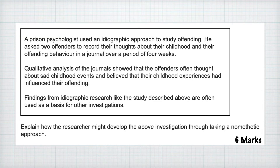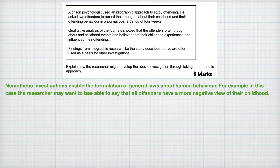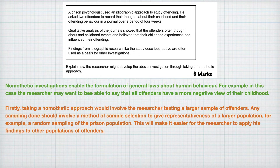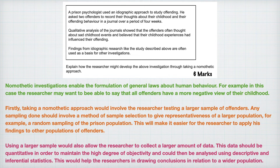So this is what I would do. I would start by saying what a nomothetic approach actually is and obviously relate it to the question. Then I would start giving my examples of what the researcher could actually do — things like taking large samples and why they should take large samples, what that sampling might look like, data analysis with examples of data analysis techniques, and why they might want to conduct data analysis in terms of creating general laws. On the screen you can see some examples of what I would do. They're by no means exhaustive, but that is enough to get you the full six marks.